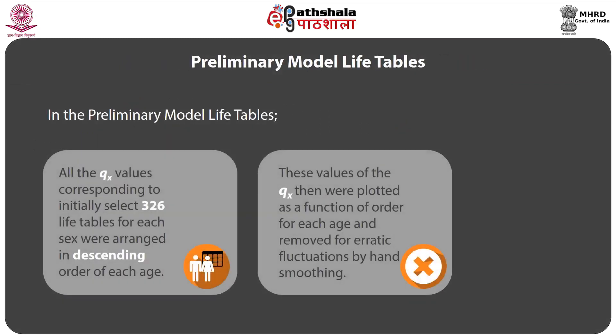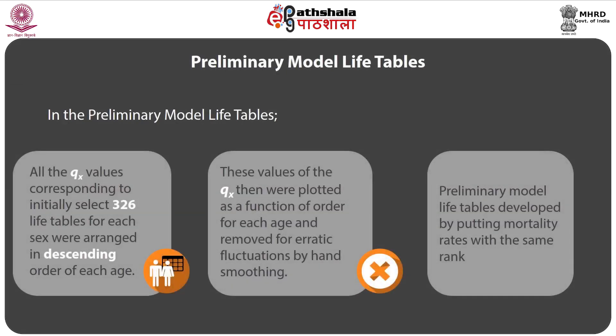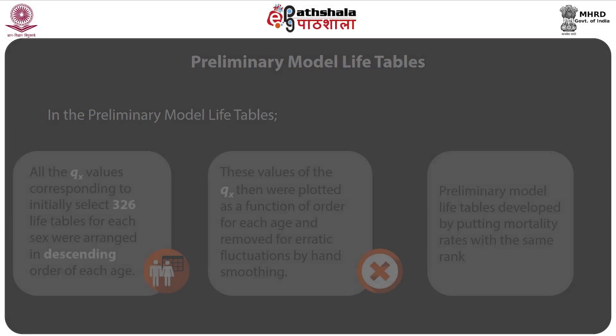The Preliminary Model Life Table was constructed as follows: all the qx values corresponding to the initial selected 326 life tables from each sex were arranged in descending order of each age. These qx values were then plotted as a function of order for each age, and erratic fluctuations were removed by hand smoothing. Preliminary model life tables were then developed by putting mortality rates with the same rank together.